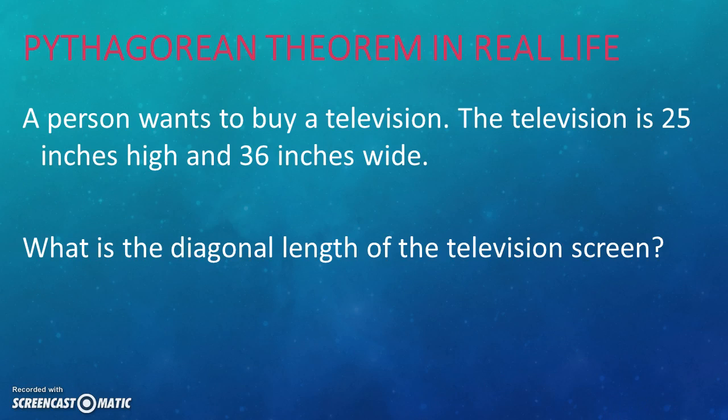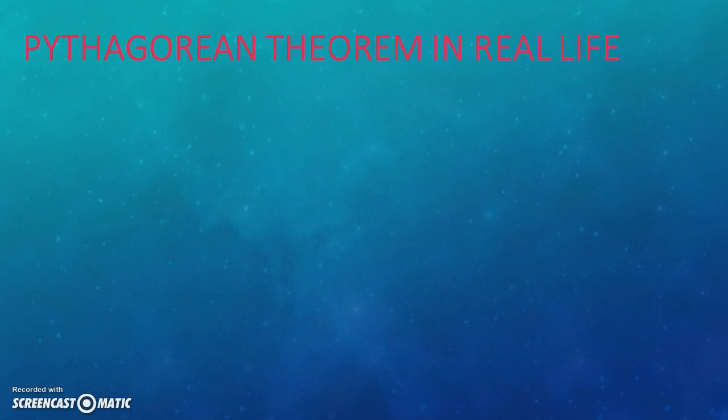Now, we will discuss the implementation of Pythagorean theorem in real life. A person is looking to buy a television with good diagonal screen size, but he has no idea what size suits him. He only knows about the width and height, but that isn't enough to satisfy him.